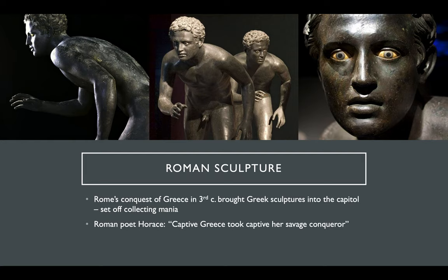Let's talk about Roman sculpture. The same rules apply — most bronze sculptures would have been left unpainted, but stone statues even in Rome would have been painted. Roman sculpture was heavily influenced by Greece. When Rome conquered Greece in the third century BC, they brought sculptures and poets and teachers — every kind of cultural achievement of the Greeks — into the center of the empire. They adopted those artistic practices in particular. The Roman poet Horace famously said: 'Captive Greece took captive her savage conqueror.' The Romans were basically totally enthralled by Greek art and culture, and this is very true for sculpture.